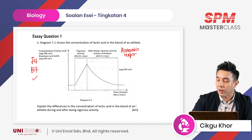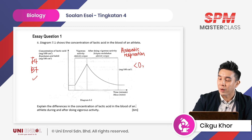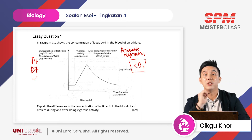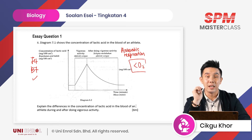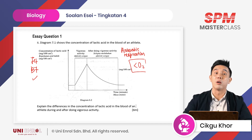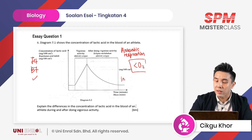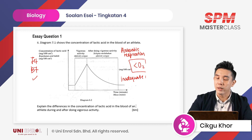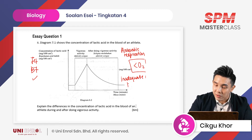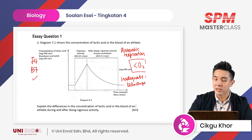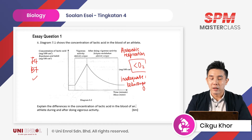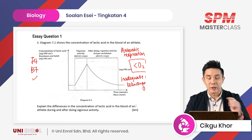Anaerobic respiration happens when there is a lack of oxygen — kekurangan oxygen. In English, we say inadequate oxygen. In BM, you can just say kekurangan oxygen. Now, let us look at the question.